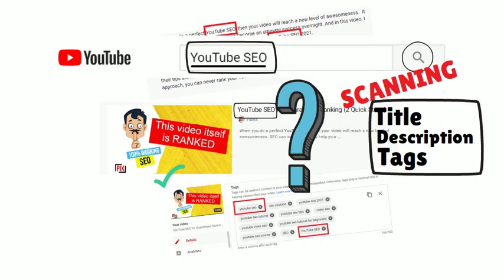So look what I did first. I first made sure that YouTube algorithm knows about my video, and that's why I optimized my title, description, and tags with my target keyword.